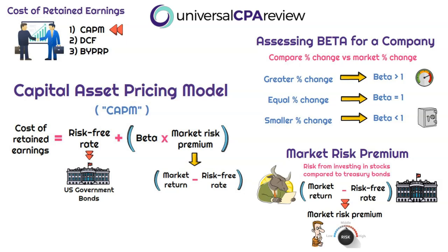Here's a quick visual on the market risk premium. For the market return, we have the bull — everybody wants a bull market. We subtract the risk-free rate, which is the U.S. Treasury bond. That difference is the market risk premium — how much more risk are we taking on by investing in stocks compared to Treasury bonds?